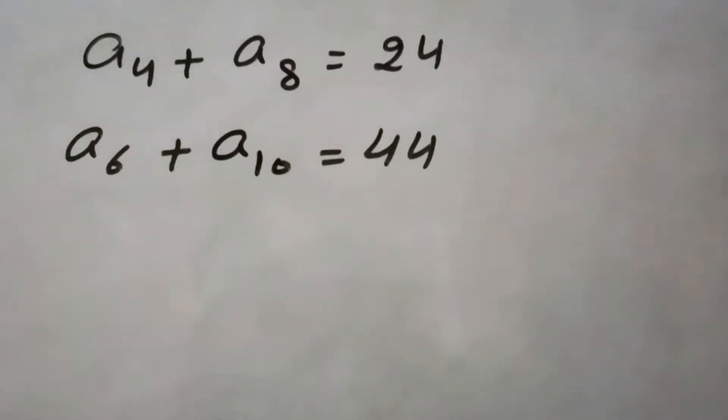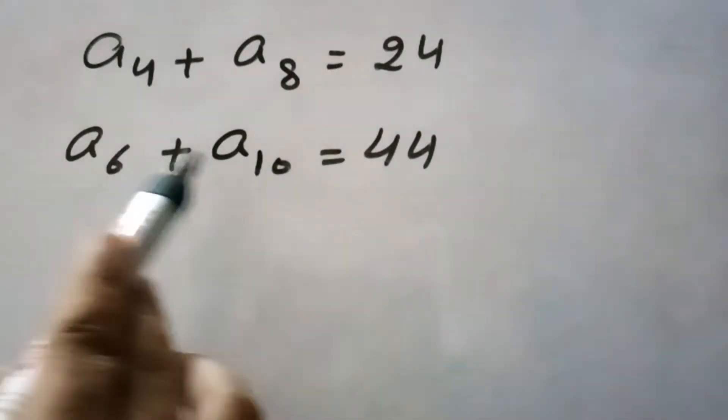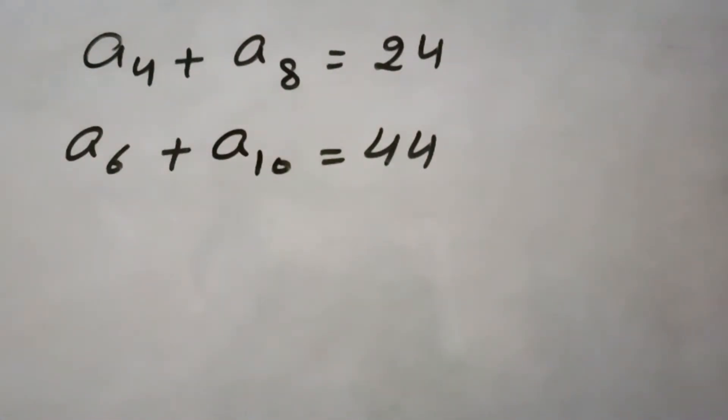In this question, it is given that sum of 4th term and 8th term of an AP is 24, and sum of 6th and 10th term is 44. We need to find the AP.